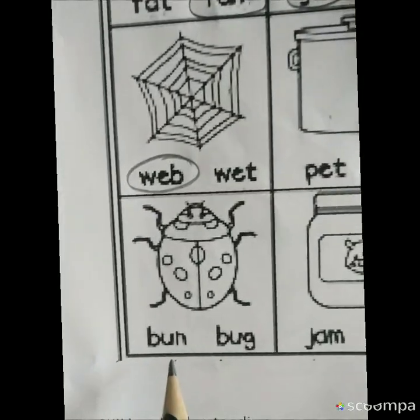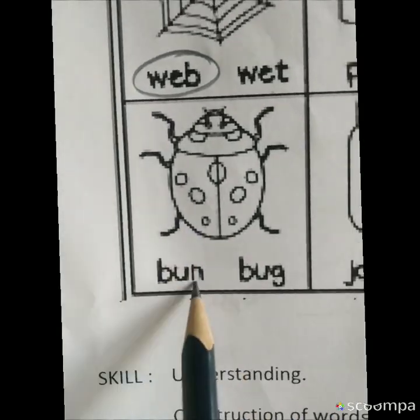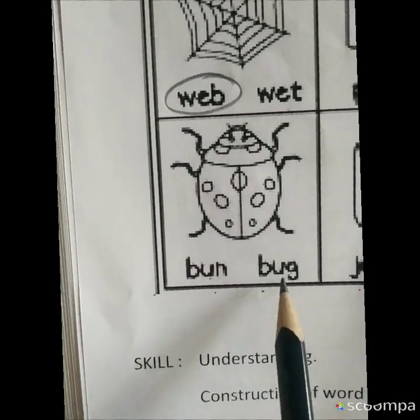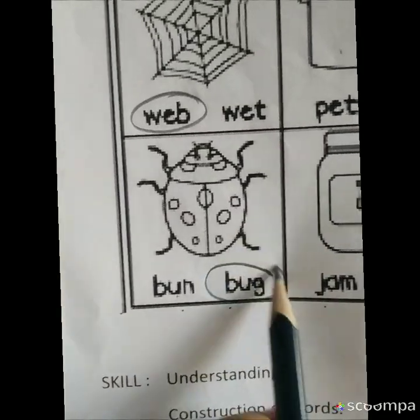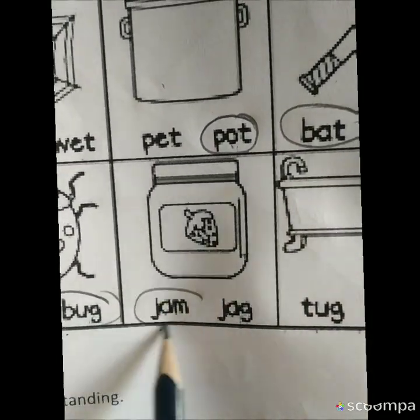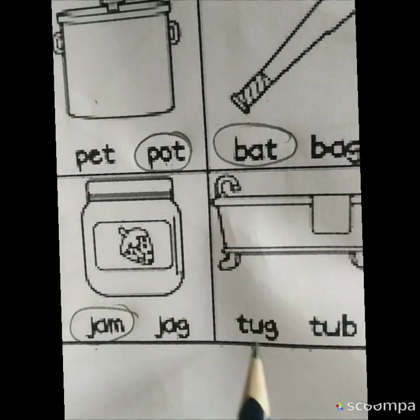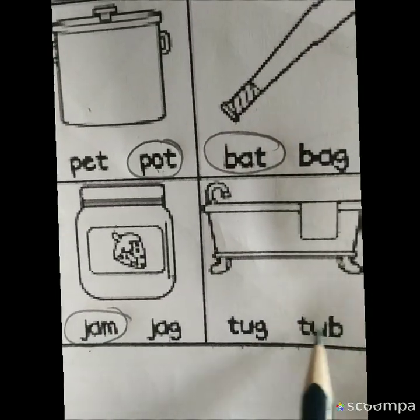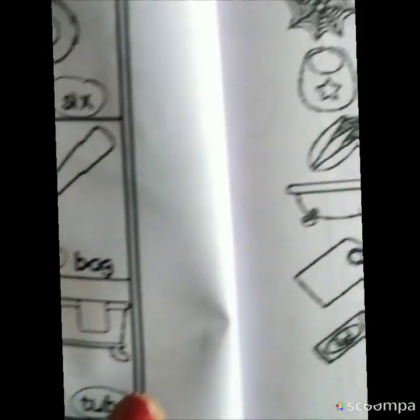This is bat. It's not a bag, it's bat and bag. Bat. This is bug. Bug and bun. Bug. This is jam. Jam and jar. Jam. This is tub. Tug and tub. Tub.